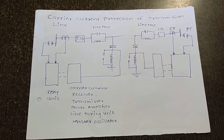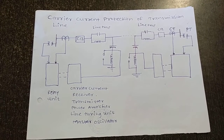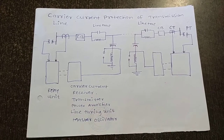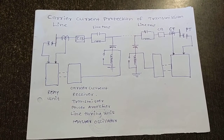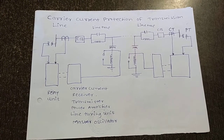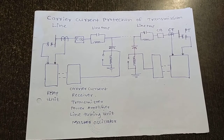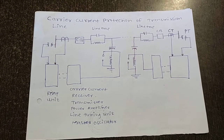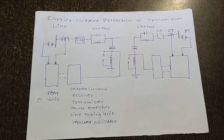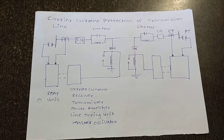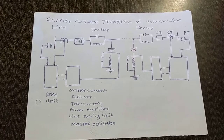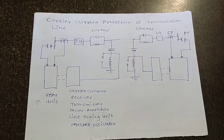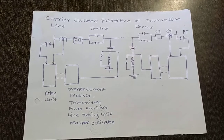The third element is the transmitter. Whenever a voltage of positive polarity is impressed on the control circuit of the transmitter, it generates a high frequency output voltage. This output voltage is then impressed between one phase conductor of the transmission line and the earth.